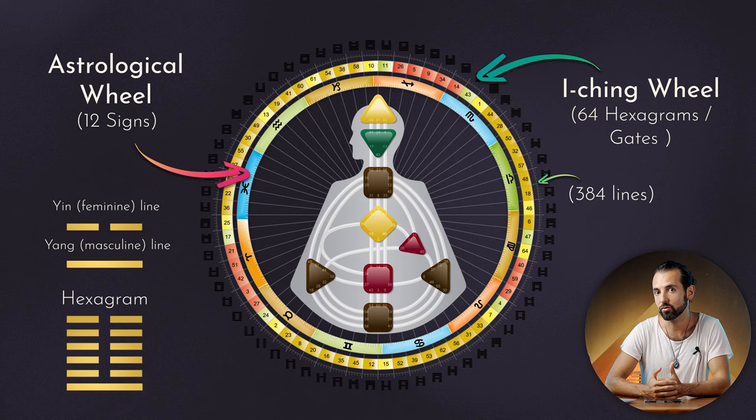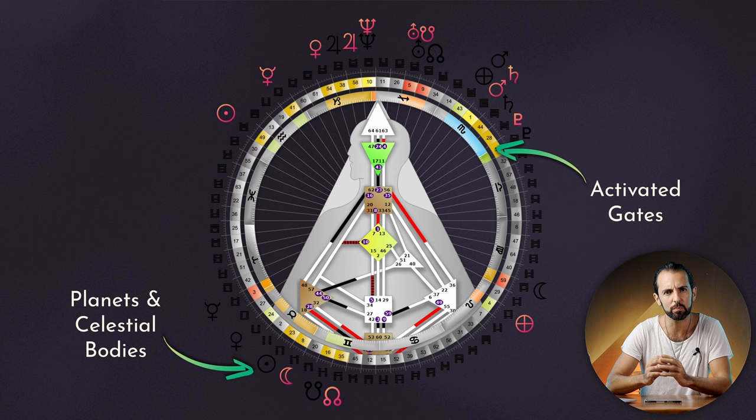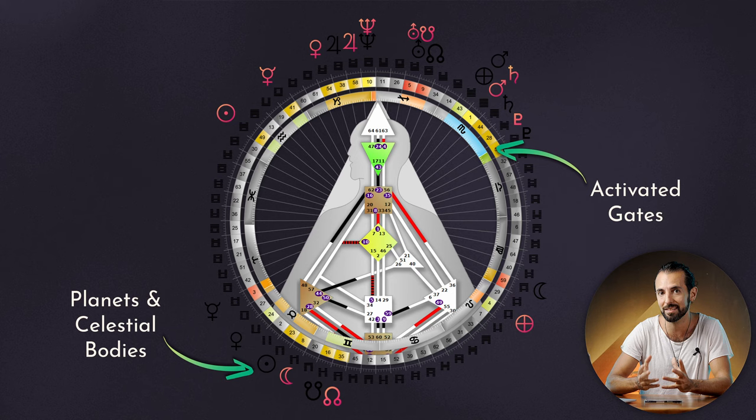When you were born, the planets were in specific positions — the Sun, the Moon, the Earth, Mercury, Venus, Mars — all of those planets were in a specific position, and the position they were in was impacting the neutrinos. These very, very small particles that are in the atmosphere, in the whole cosmos, and that is going to have an impact on you. That is the premise on which this is based, and there is scientific evidence that neutrinos exist and do have an effect in physical reality.